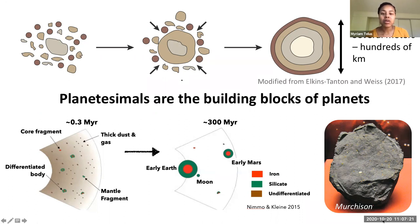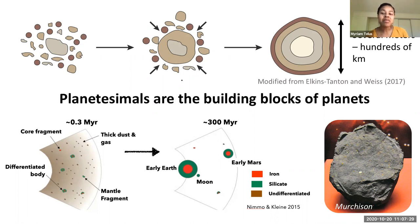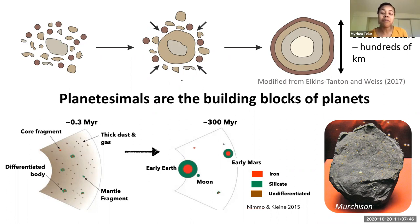Asteroids and comets are remnants of the population of planetesimals that went into forming the solar system. But most of the material in our meteorite collections are from asteroids. It's really awesome that meteorites provide a geological record of the population of planetesimals that went into building the terrestrial planets, and they can potentially help us understand planetesimals.